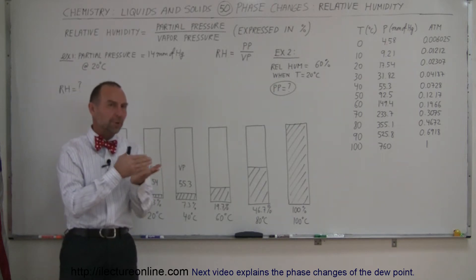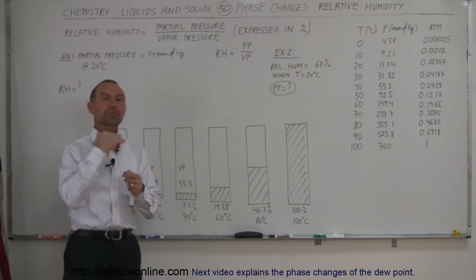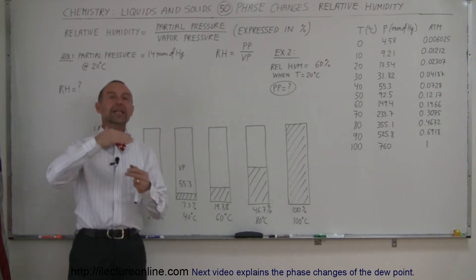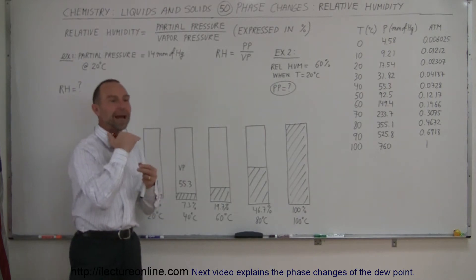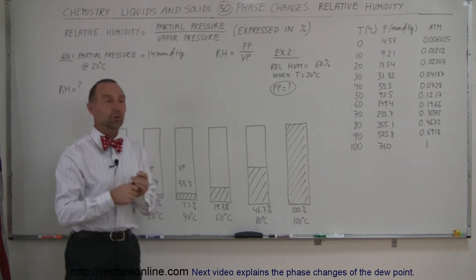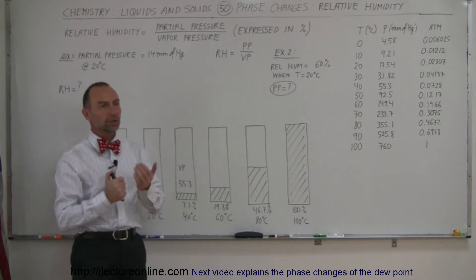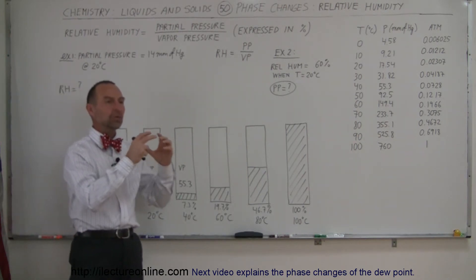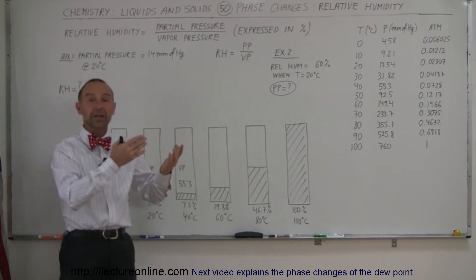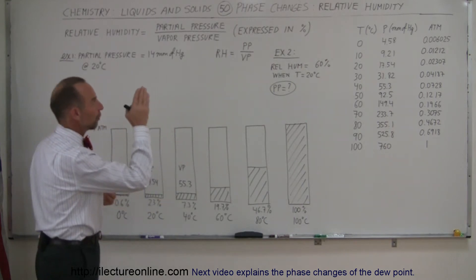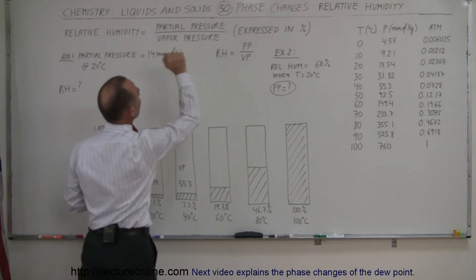Just to make sure we understand partial pressure and vapor pressure, let's review it again. The vapor pressure is the pressure attributed to water vapor when there's an equilibrium between the vaporization and condensation of water — that is the maximum pressure water vapor can have in the atmosphere at a particular temperature. The partial pressure is the actual pressure of the water vapor in the atmosphere, which could be less than the vapor pressure because it doesn't have to be fully saturated. The definition of relative humidity is simply the ratio of the partial pressure divided by the vapor pressure.